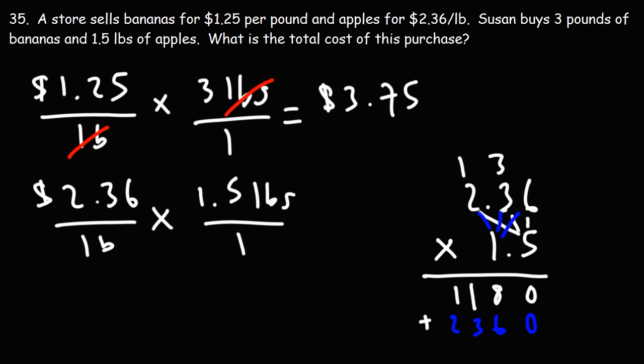Now we're going to add. 0 plus 0 is 0. 6 plus 8 is 14. We'll write the 4, carry over the 1. 1 plus 1 plus 3 is 5. 1 plus 2 is 3. Now, where to put the decimal point? Notice that we have two numbers to the right of this decimal point, and here we have one number to the right. So we have a total of three numbers to the right of those two decimal points. We need to put it here, so that we have three numbers to the right of those decimal points.